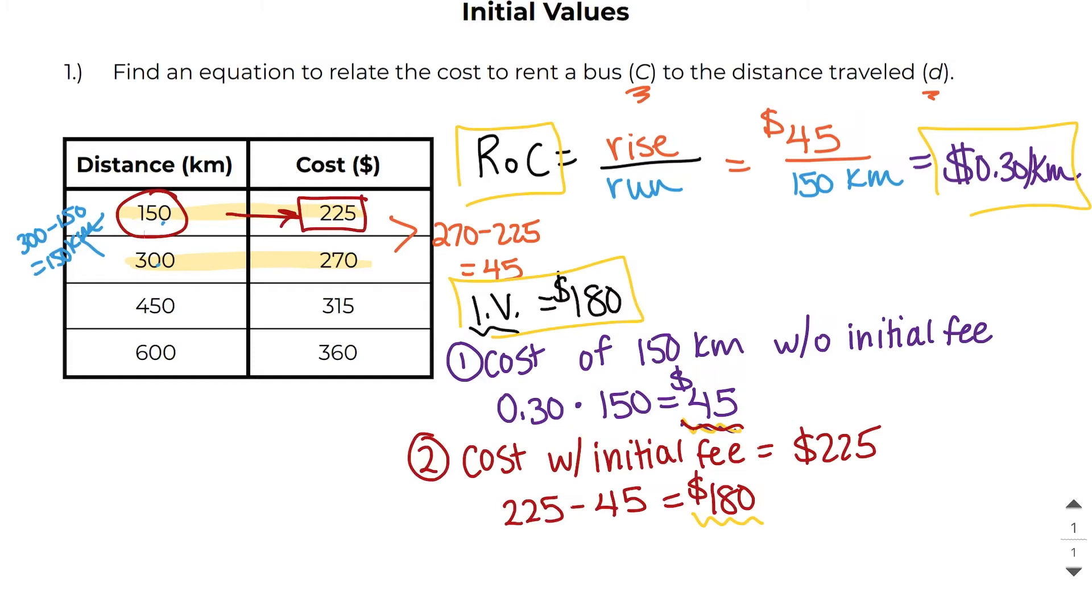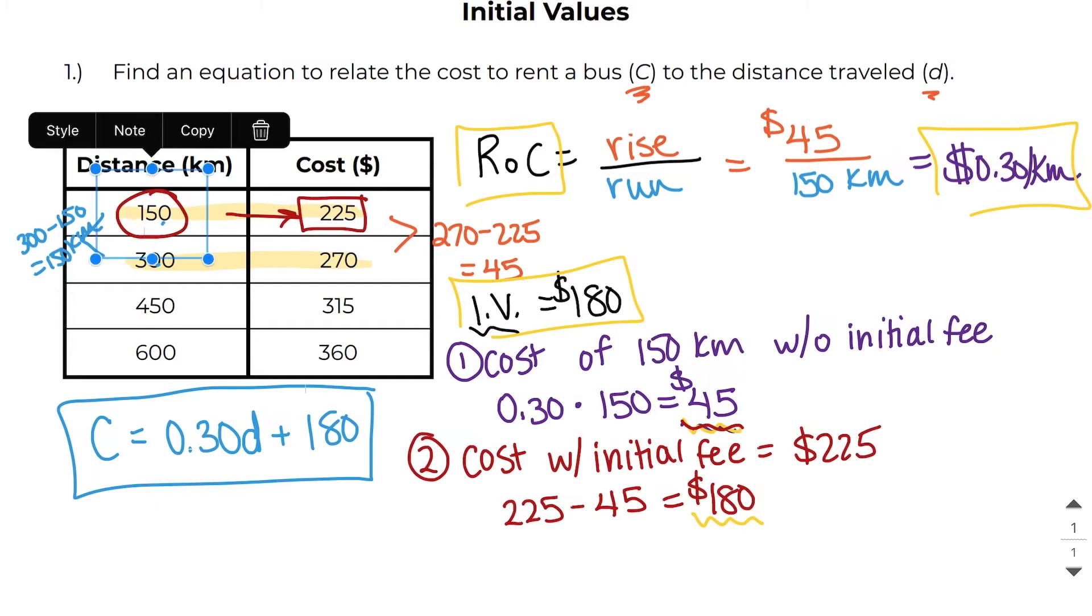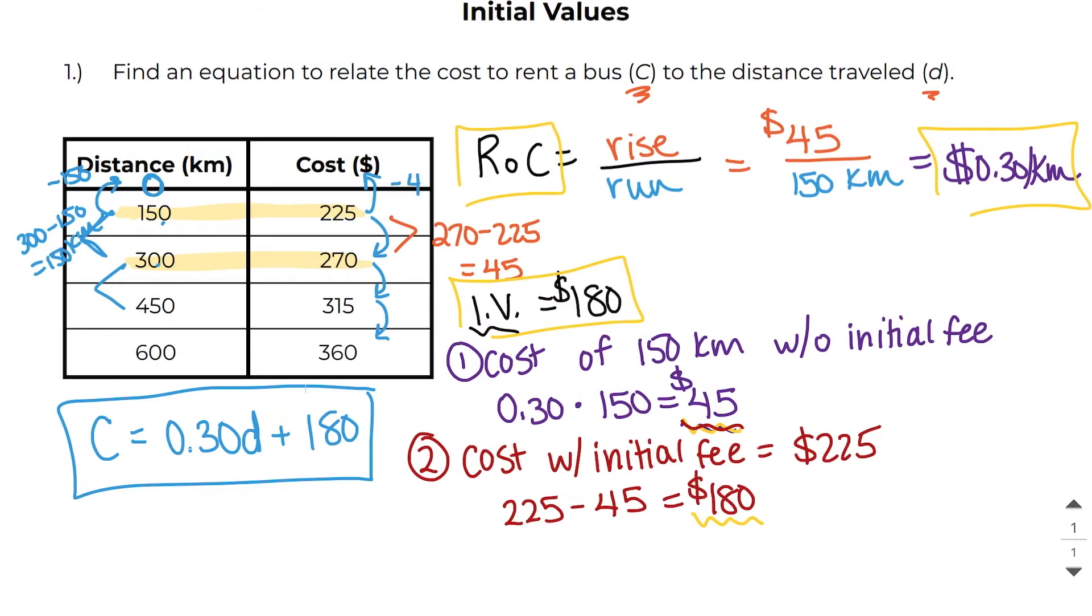So we can go ahead and write our equation now. Our equation will say that the cost to rent a bus will be 30 cents per kilometer, and it says to use D for distance traveled plus an additional $180. So this right here is our equation. Now quick note, I could have also just worked backwards to figure this out. This one is nice because it's going up by 150 each time. And we can see that the initial cost would be $180.